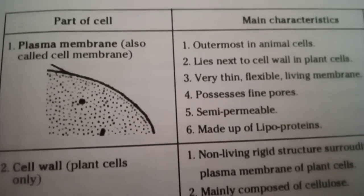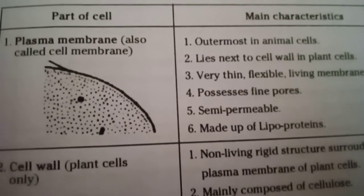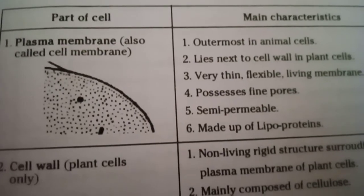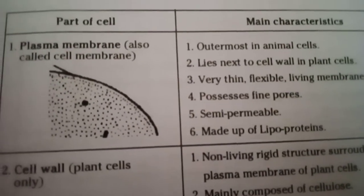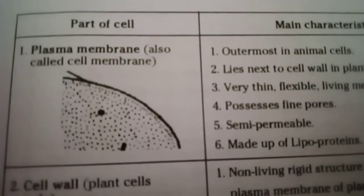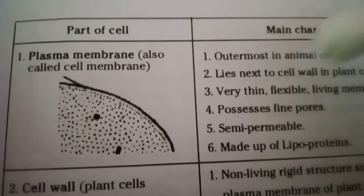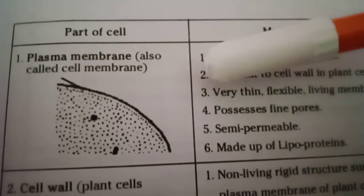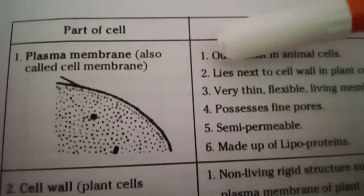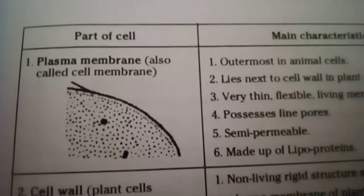All these structures are the same in plant cells and animal cells, but some structures will be different — we will learn that in continuation classes. First of all, we will learn about the plasma membrane, also called the cell membrane.